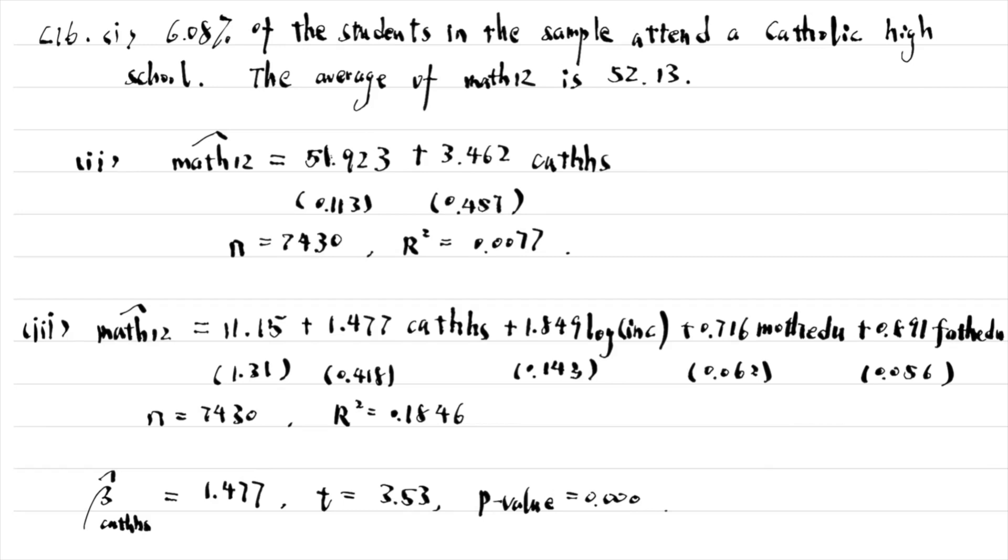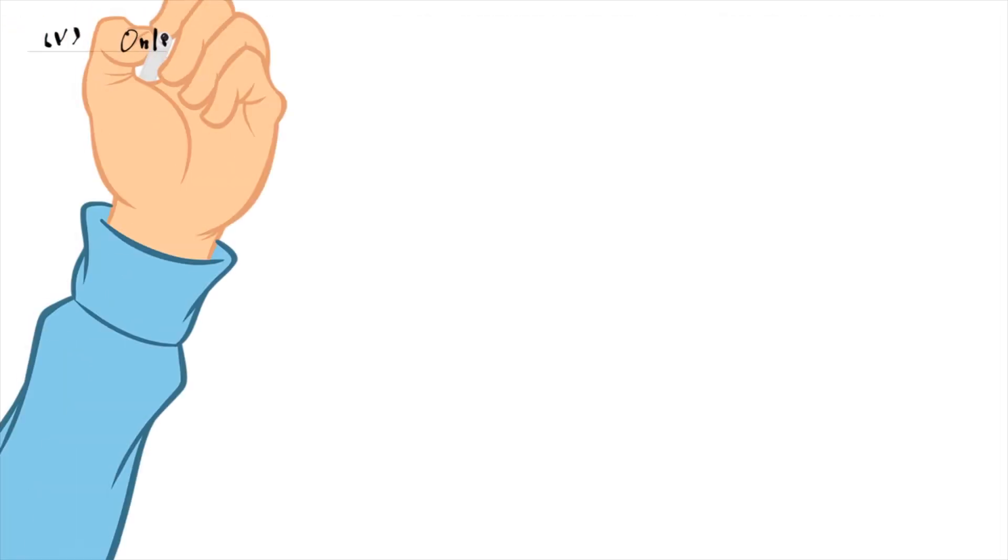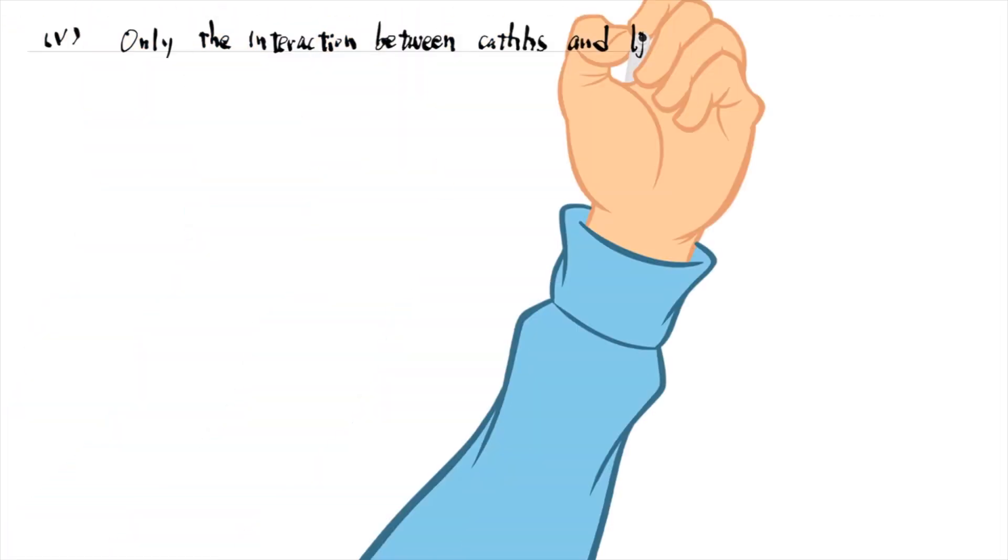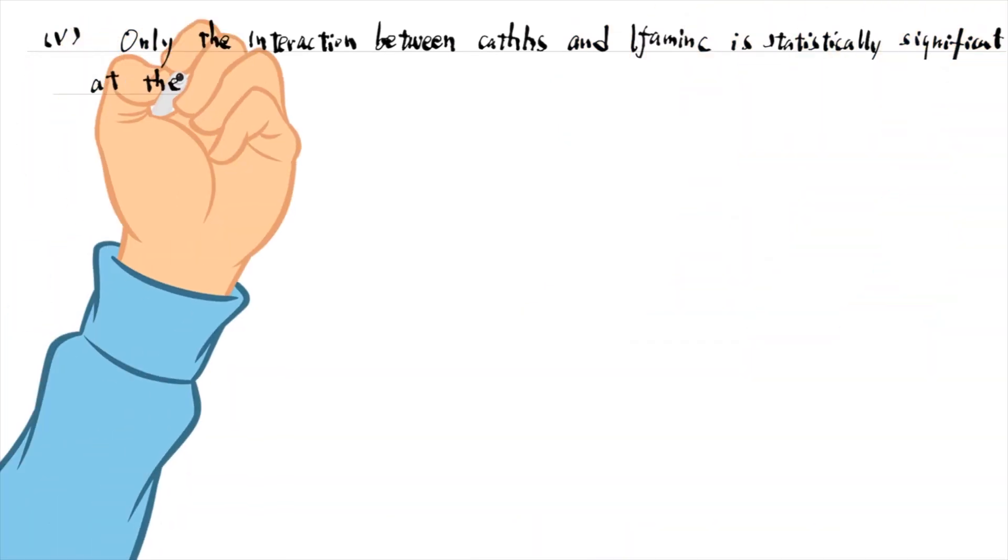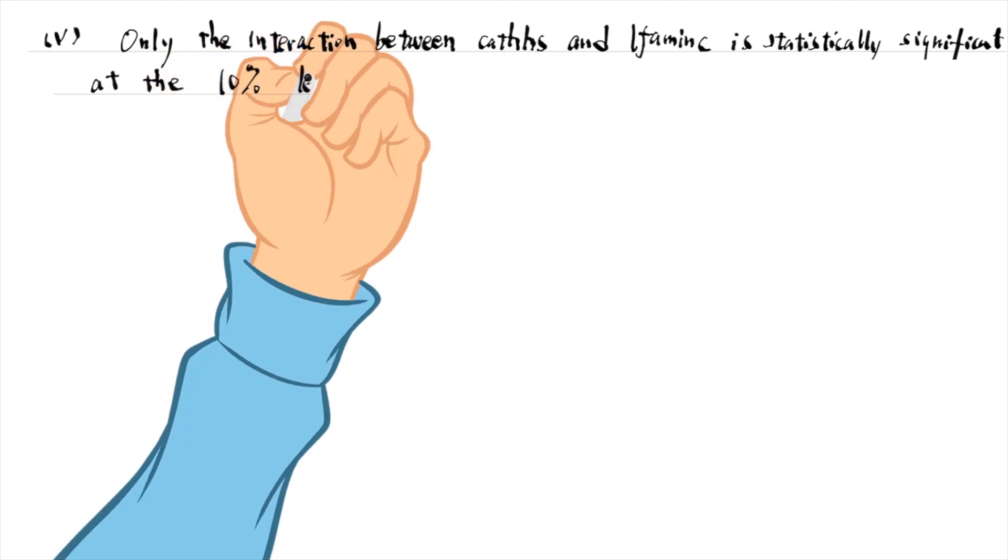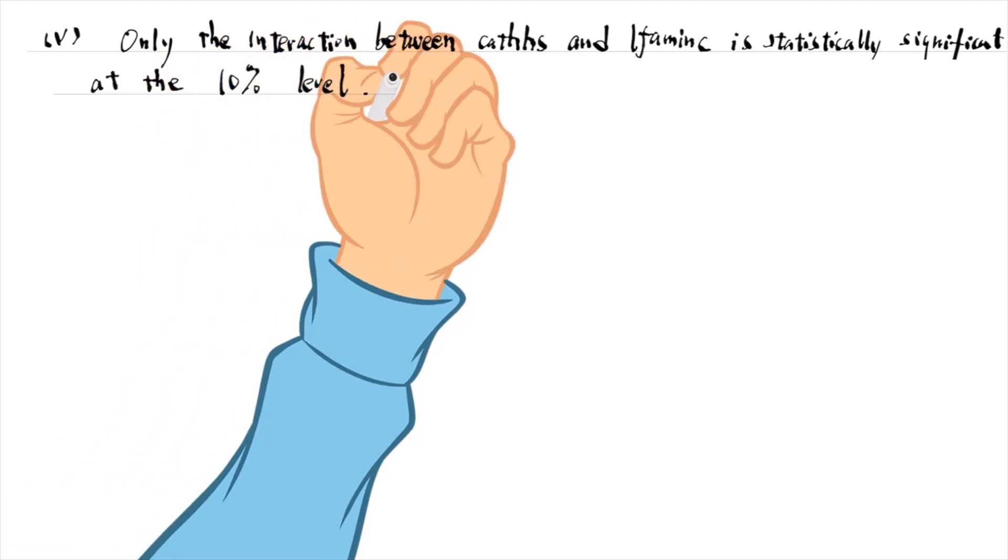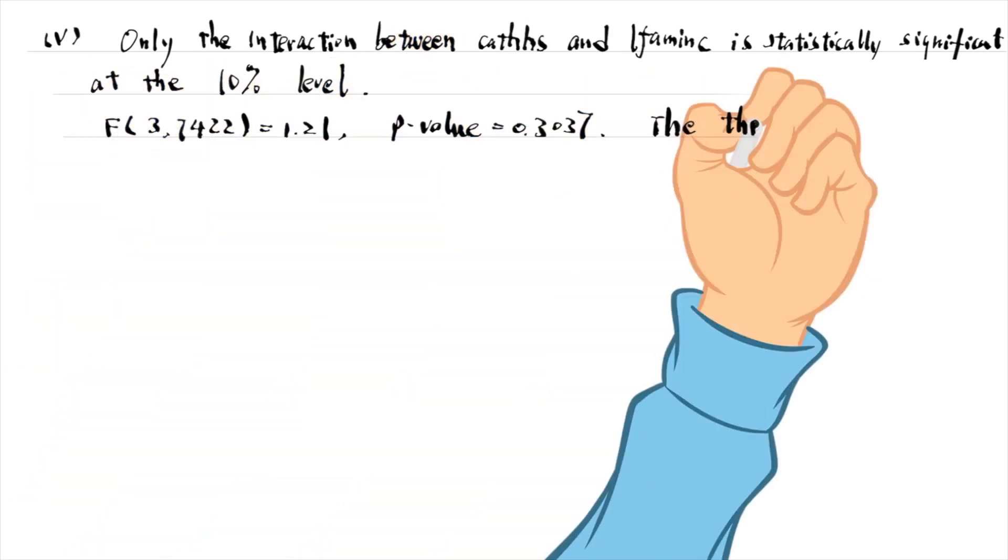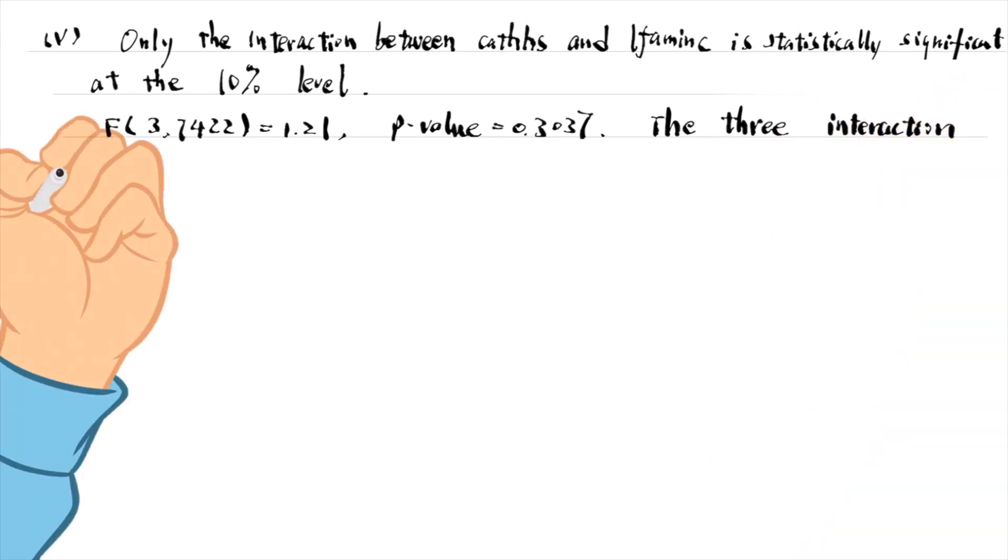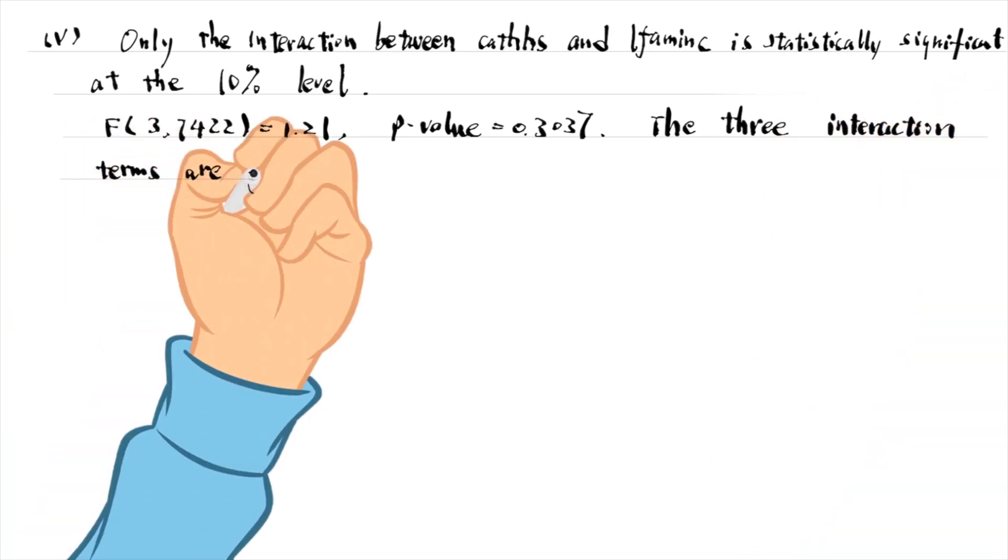The number of observations is the same for the simple and the multiple regressions. In part 5, we add the interaction terms to the model. Only the interaction between Catholic and log family income is statistically significant at the 1% level. The other two interaction terms are not statistically significant at any conventional level. The F-test shows that they are jointly insignificant. The F-statistic is 1.21 and its p-value is 0.3037.